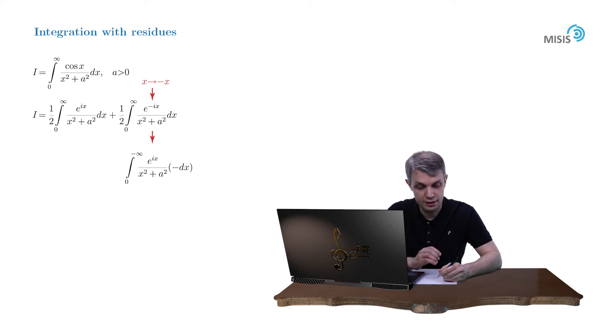By flipping the integration limits in the second integral, we may absorb this minus sign, and therefore we obtain the integral from minus infinity to zero of e to the ix over x squared plus a squared dx.